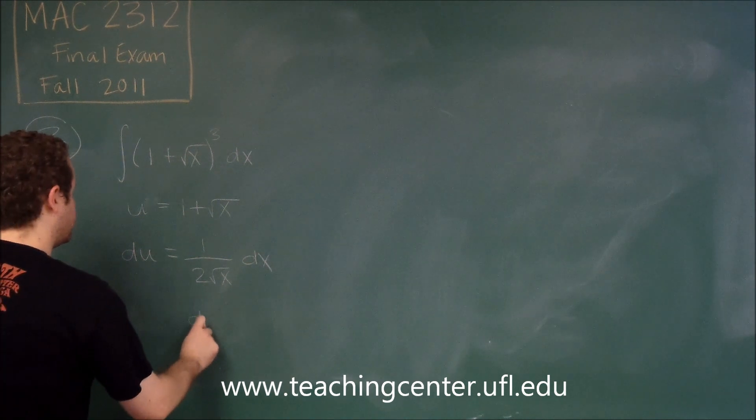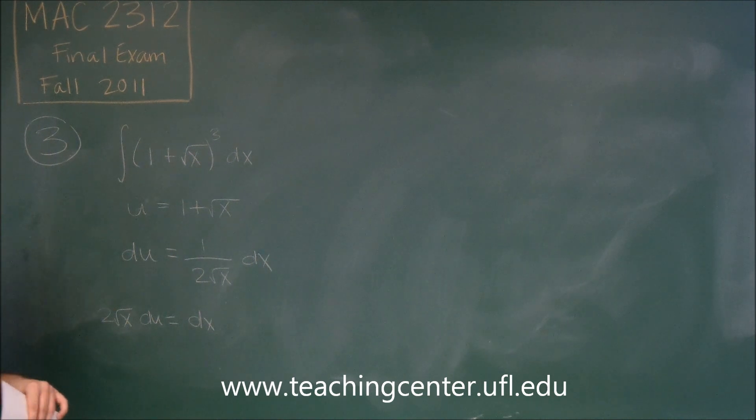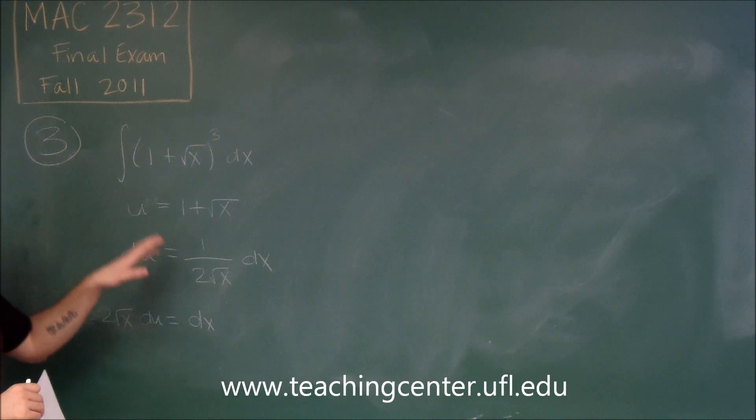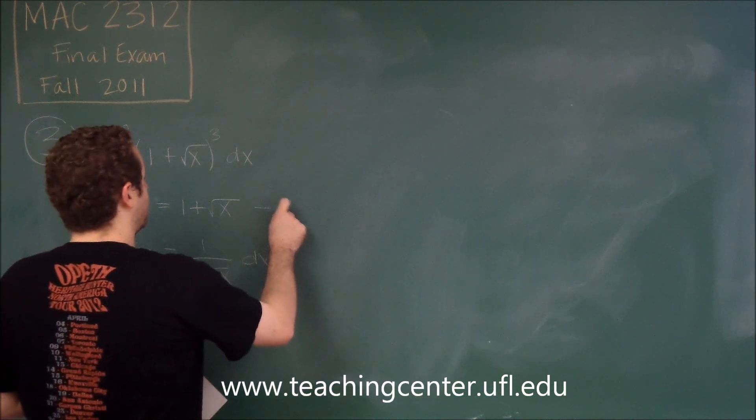Therefore your dx is equal to two square root of x du. So you can see that we don't have a square root of x that's going to cancel out.